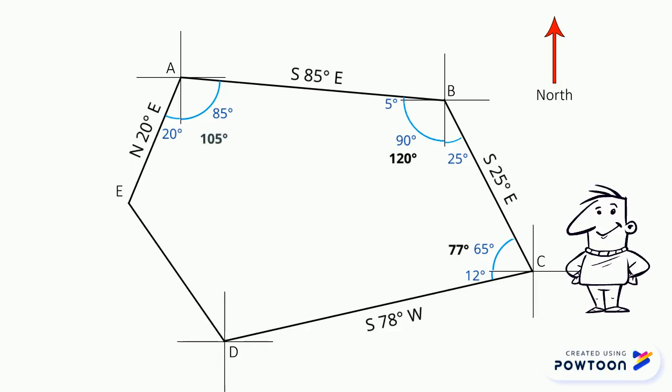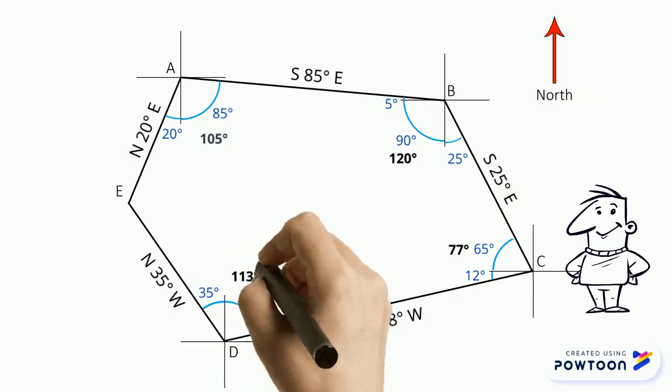The given bearing of point D towards point E is north 35 degrees west, which means this part of point D is 35 degrees. And since the alternate angle of point D is 78 degrees, therefore it also measures 78 degrees. If we add 78 plus 35, it gives us the interior angle of point D, which is 113 degrees.